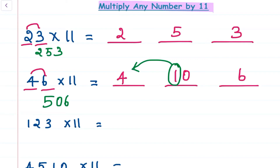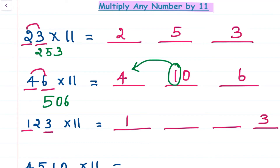Next comes 123 into 11. Here we have a three-digit number, so we have to mark four parts. Our first part answer is the first number, the last part answer is the last number, and the middle parts are consecutive additions: 1 plus 2 is 3, and 2 plus 3 is 5. So our answer is 1353.